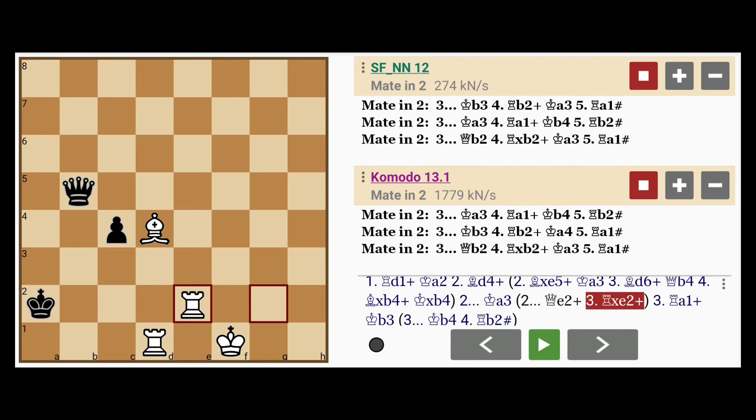So black can buy a little bit of time by sacrificing that queen anyway with a cross check. Rook captures queen, and we are in the same position that we were before.